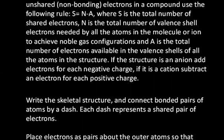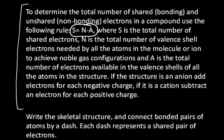Still sometimes that's not enough. And so I recommend learning the S equals N minus A rule. Where S is the total number of shared electrons, N is the total number of electrons needed by all the atoms in the molecule, and A is the number of electrons that are actually available. If the structure is an anion, you should add electrons for each negative charge. And if it's a cation, you subtract for each positive charge.